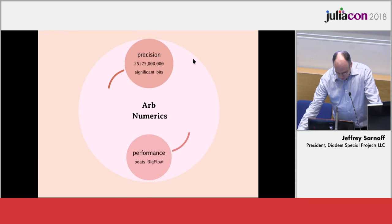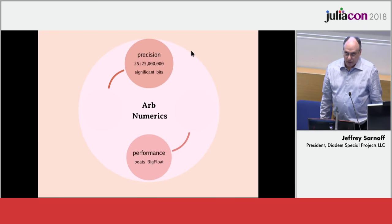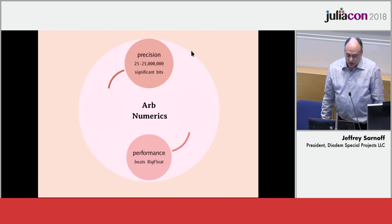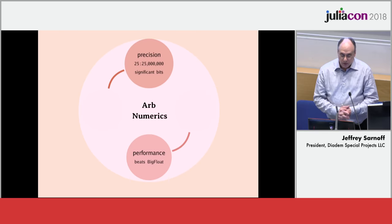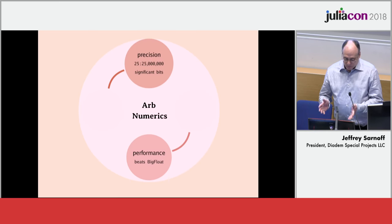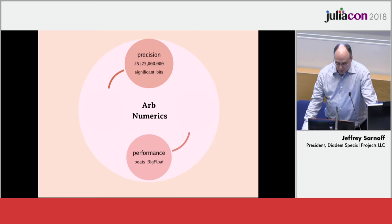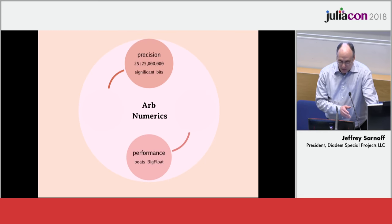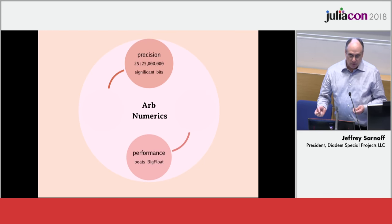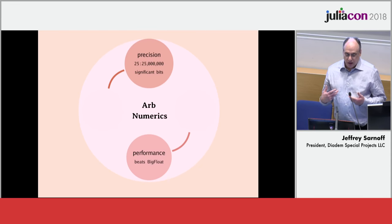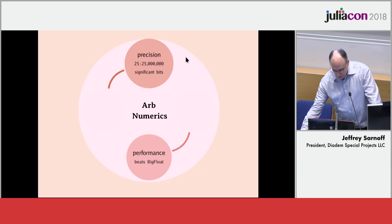ArbNumerics is where you want to be if you're into precision and performance. Compared to BigFloat, it's considerably faster at reasonable precisions, and it actually uses a lot of the BigFloat library, but just in a way different from how BigFloat does — and more efficiently.